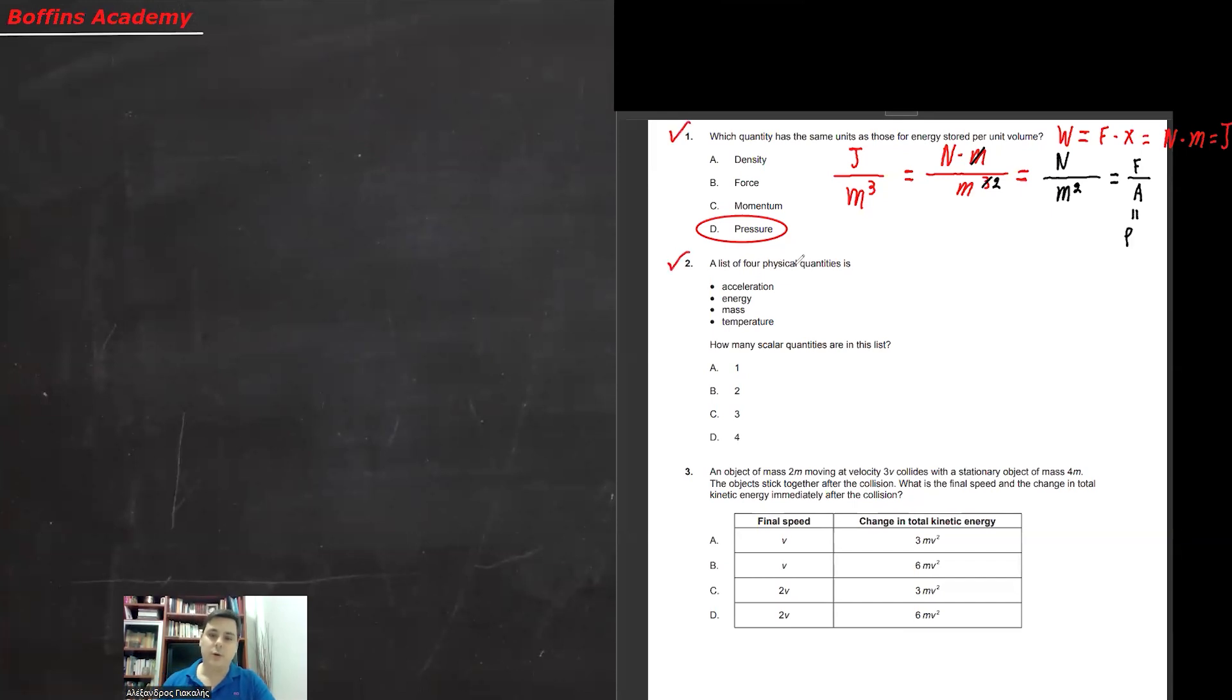A list of 4 physical quantities is acceleration, energy, mass and temperature. How many scalar quantities are in this list?